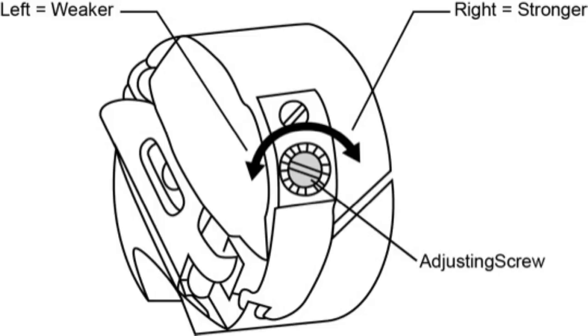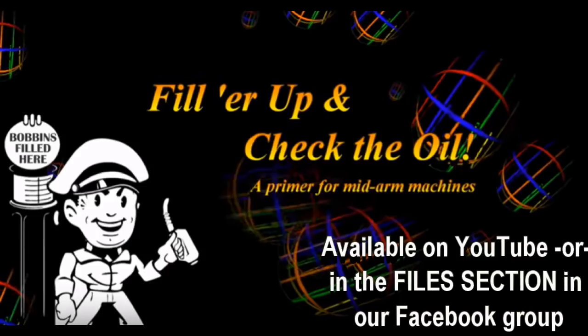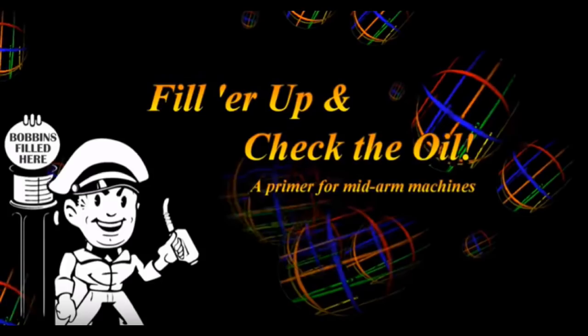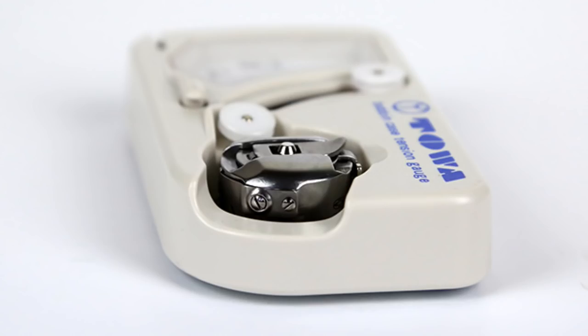I made a video a while back called Fill Her Up and Check the Oil. It will show you how to adjust your tension on your bobbin as well as other maintenance for your sit-down quilting machine. There is also a mechanical gauge for both the L and the M style bobbins to show you exactly how much tension is on that bobbin case.